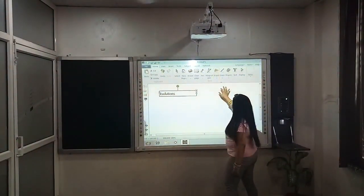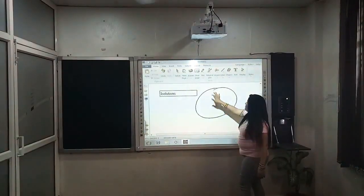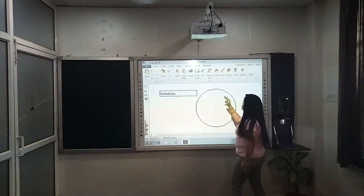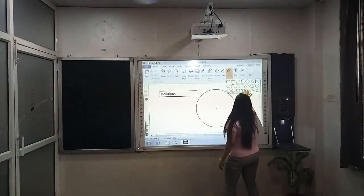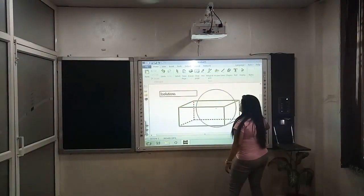Then we have given shape recognition also. Like a rough diagram, it will get converted into a perfect shape. Then some of the pre-filled shapes I have given. In this way. You can see.